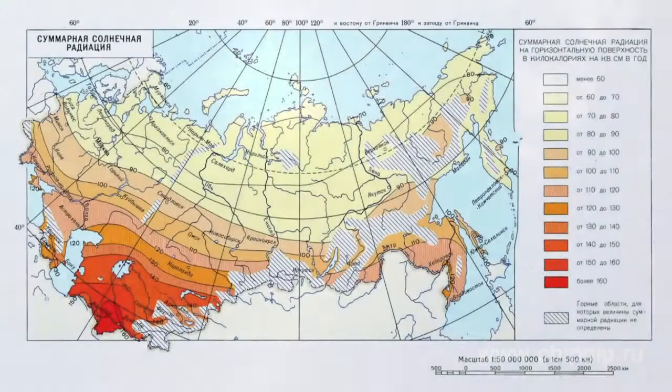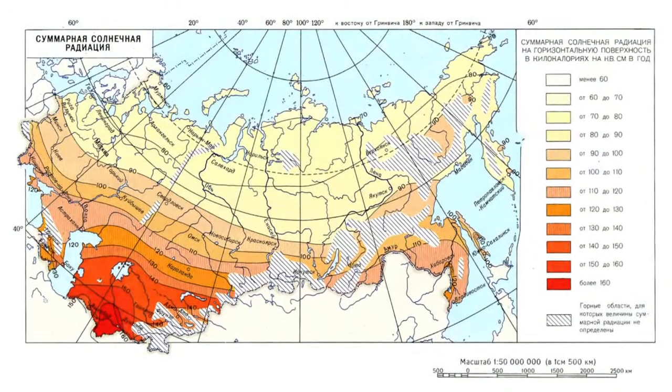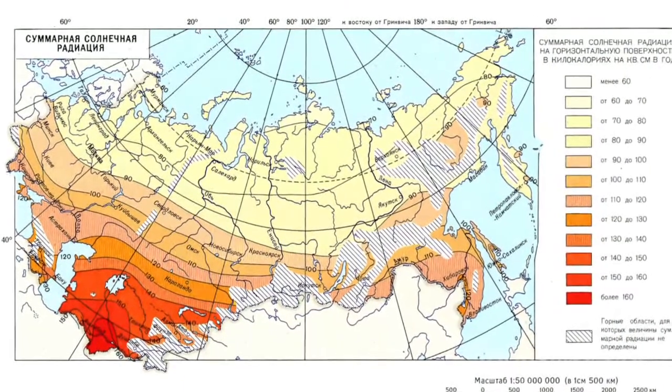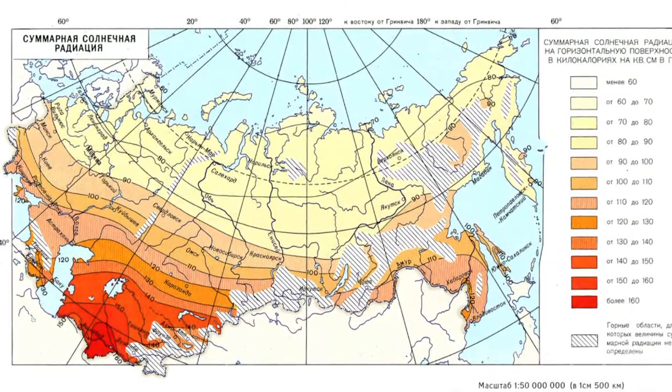It depends upon various factors, like solar activity for example. Besides, the intensity of solar radiation depends on the height of the sun above the horizon. At high sun, the path that the sun rays have to travel will be significantly shorter than at times when the sun is on the horizon. Because of the increase in the path, the solar radiation intensity changes as well.